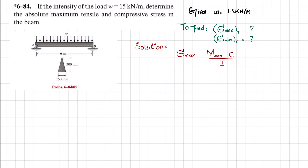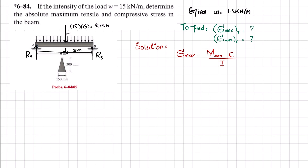If you remove the pin support at point A, there will be a reaction force R_A. If you remove the roller support at point B, there will be a reaction force R_B. Converting the distributed load w into a point load: 15 times the total length of 6 meters gives 90 kilonewtons, acting at a distance of 3 meters from each end — so 3 meters from each side.